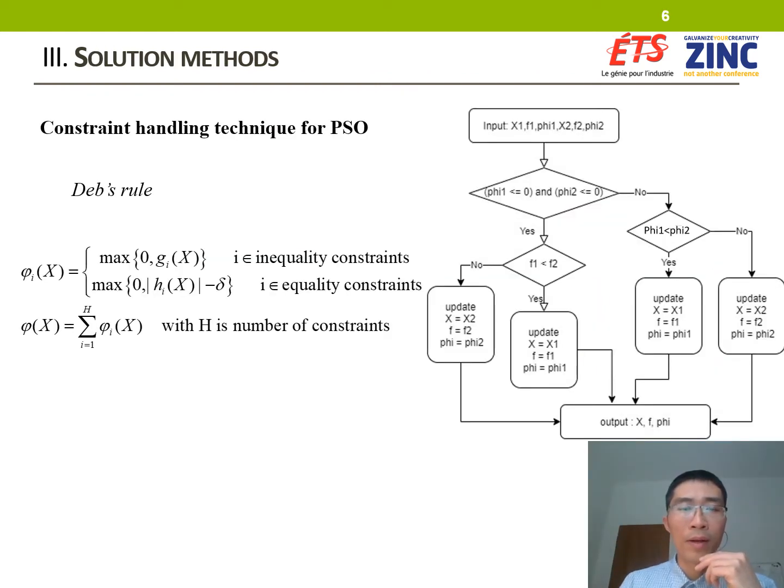As mentioned above, the original PSO is not able to handle constraints. We are going to apply Deb's rule as an intuitive approach to handle constraints without determining any additional penalty factor. By applying Deb's rule, a position that does not violate or violates the constraint with a lower degree of violation is chosen to update the personal best and global best.